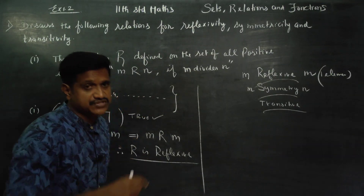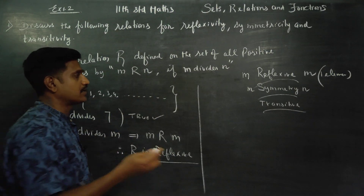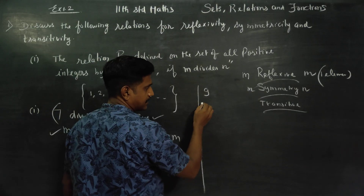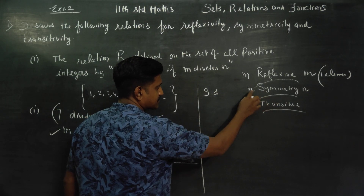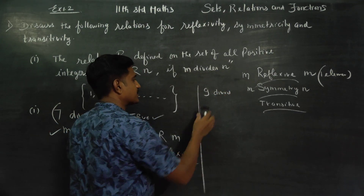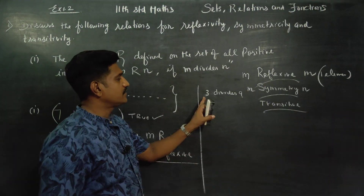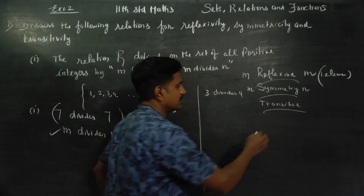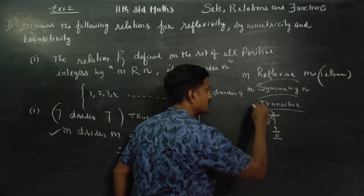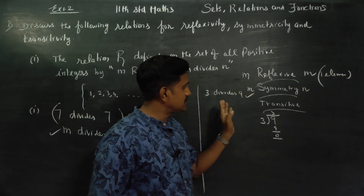For symmetry check, you have to choose two letters. For example, choose nine and three. Nine divides three? No. Three divides nine? Three times three are nine, remainder is zero — this is true. So nine divides three is false, but three divides nine is true.